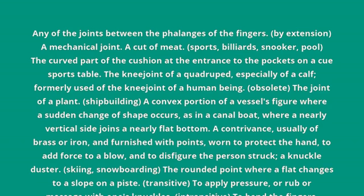A contrivance, usually of brass or iron, and furnished with points, worn to protect the hand, to add force to a blow, and to disfigure the person struck — a knuckle duster. Skiing, snowboarding: the rounded point where a flat changes to a slope on a piste.